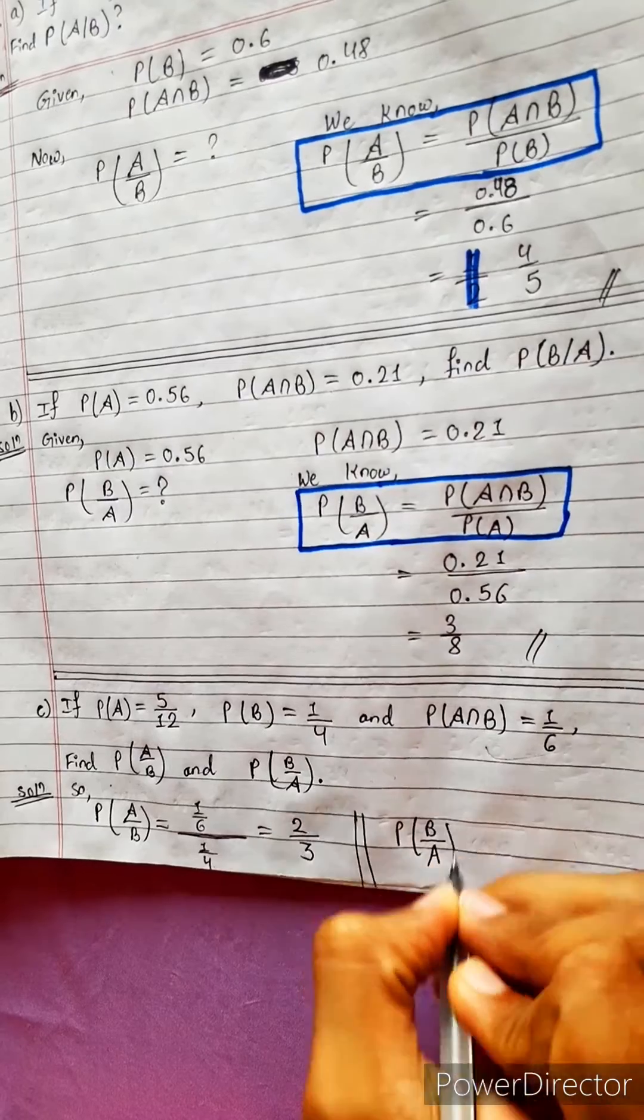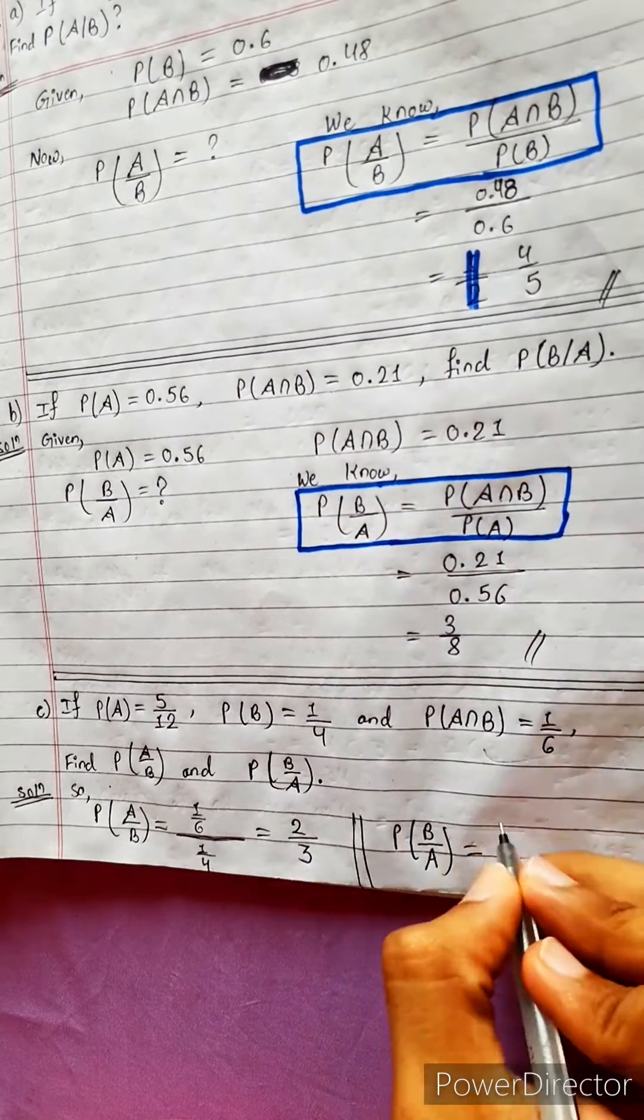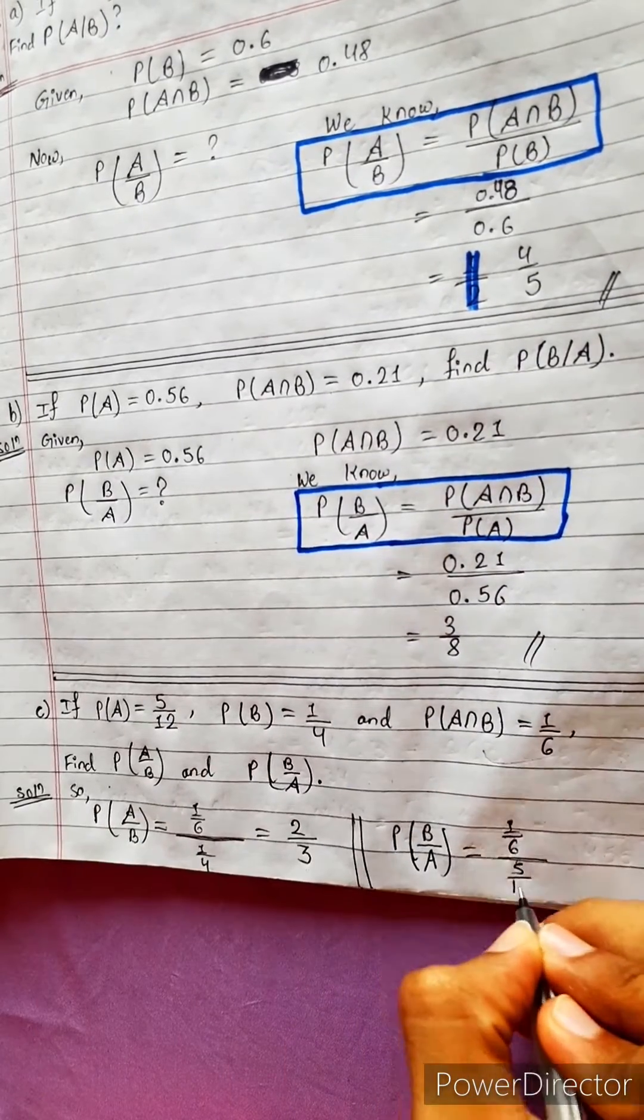The formula is B by A equals to, so formula is the answer. Intersection divided by P(B). Intersection is 1 by 6 divided by A means P(A), 5 by 2L.